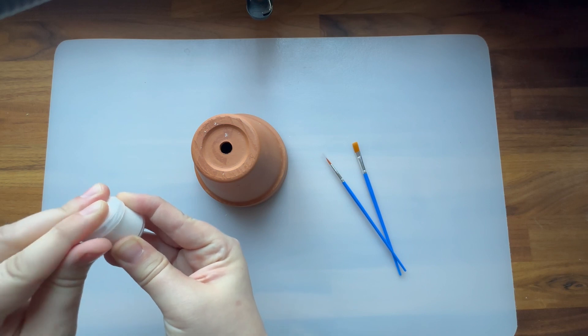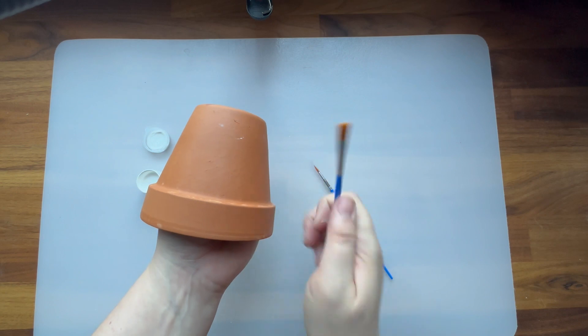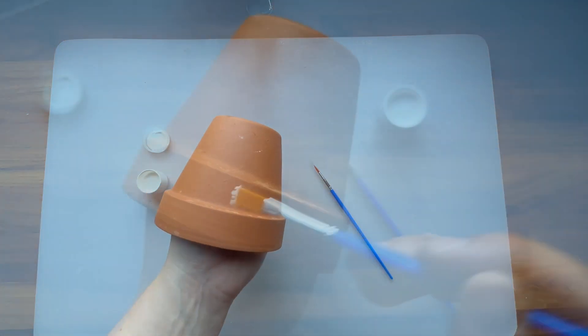Start decorating your terracotta gingerbread house by adding some painted details. I found it easiest to put the pot onto one of my hands and then use the other to paint with.